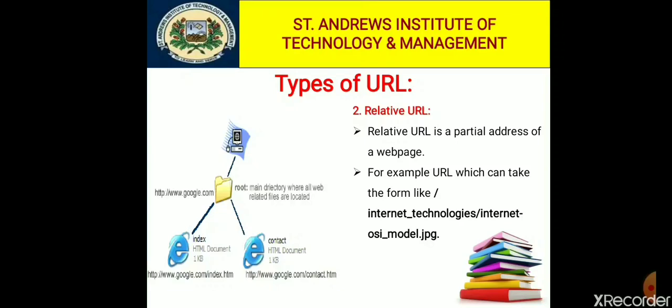Relative URLs have shorter addresses as they refer to the root directory, sub-directory, or slash sub-directory. Relative URLs help webmasters to maintain the site without rewriting the whole path again and again if they make any changes in the directory.